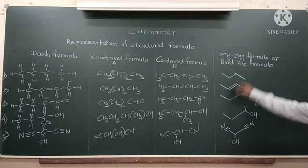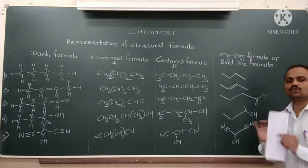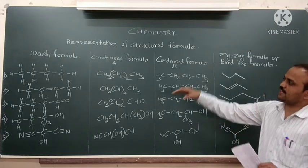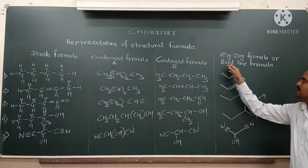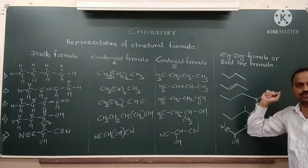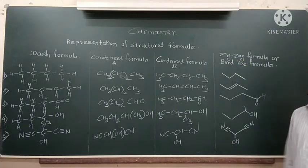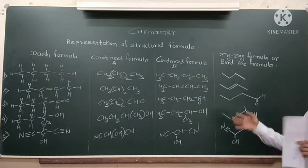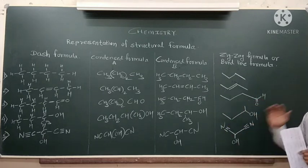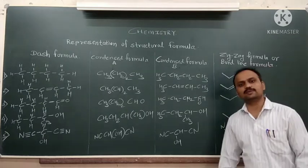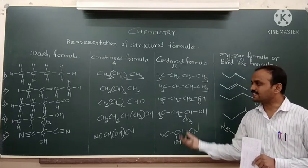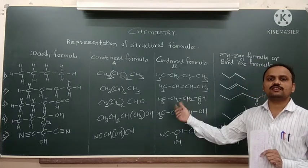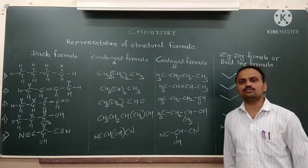So, we have studied the meaning of dash formula, condensed formula A, condensed formula B and zigzag formula or bond line formula. We have solved some structures for examples for better understanding of these types of representations. Further practice examples we will see in next video, students. Thank you very much.